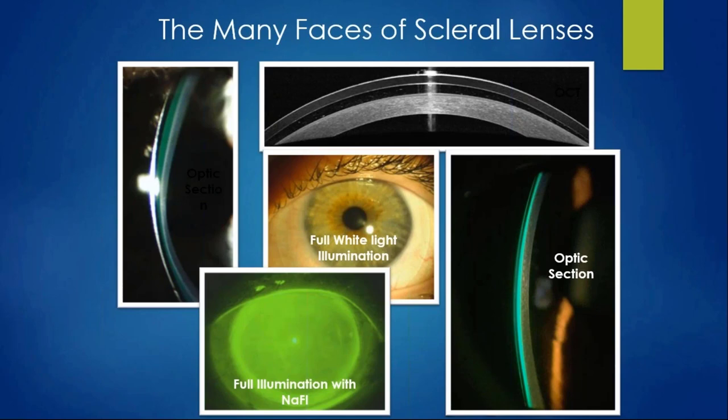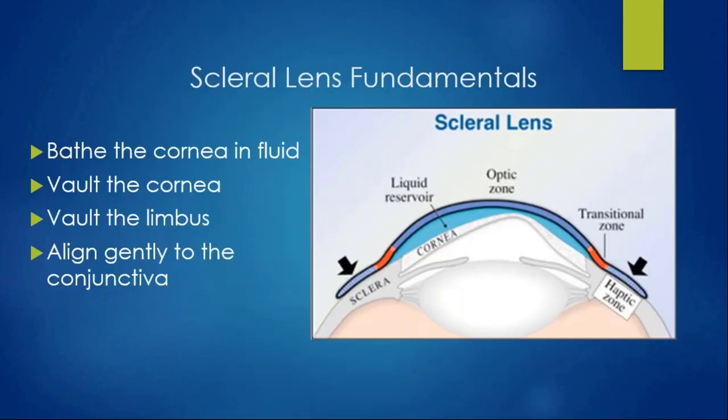When looking at sclerals, there are different ways to evaluate them. You can use the OCT, but mainly we use the slit lamp—optic section versus full illumination with sodium fluorescein. Always keep in mind, regardless of lens type: you want to be bathing the entire cornea in fluid, vaulting over the cornea. You don't want to land on the limbus either, because all your limbal stem cells are there and they're very delicate. Vault over that area and try to land as gently as possible on the conjunctival surface.